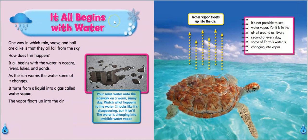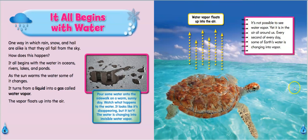It all begins with water. One way in which rain, snow, and hail are alike is that they all fall from the sky. It all begins with the water in the oceans, rivers, lakes, and ponds. As the sun warms the water, some of it changes. It turns from a liquid into a gas called water vapor. The vapor floats up into the air. It's not possible to see water vapor, yet it is in the air all around us. Every second of every day, some of the Earth's water is changing into vapor.